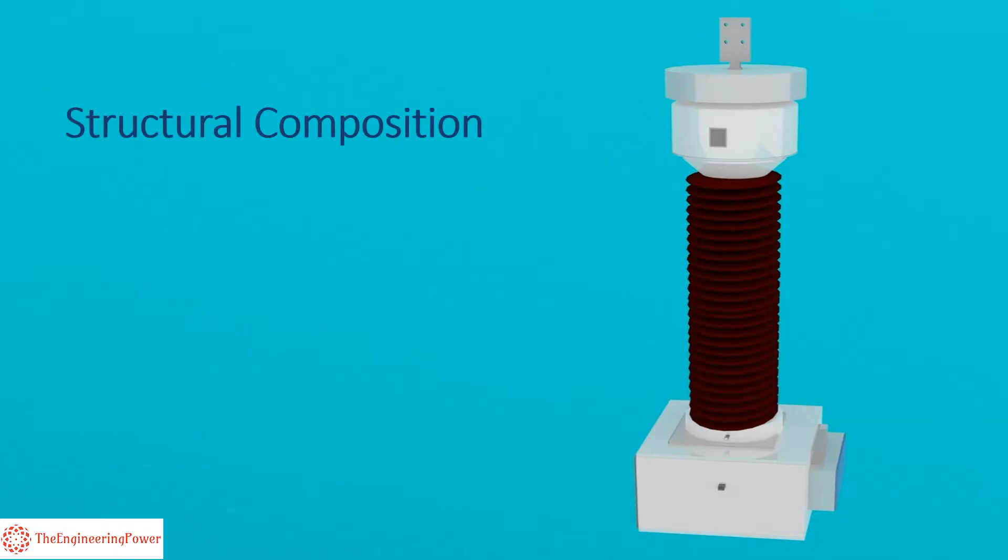Next we explain the structural composition of PT. There are four major components of PT: core, primary winding, secondary winding and insulation.